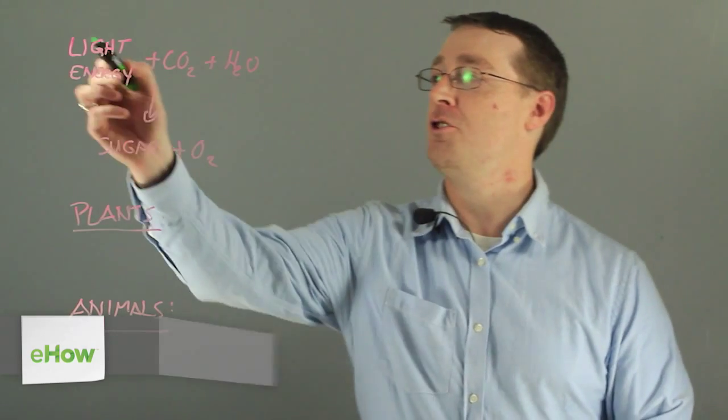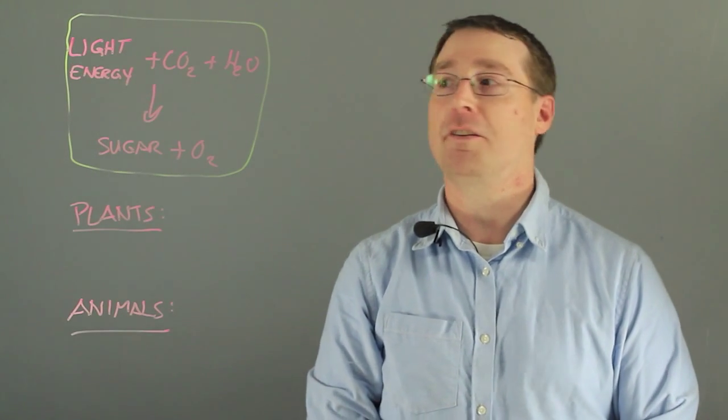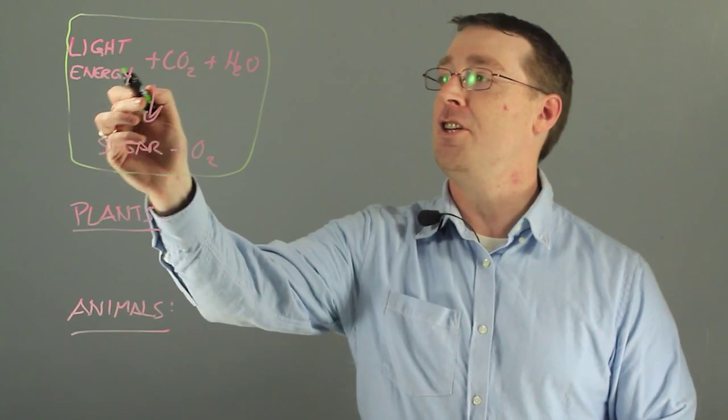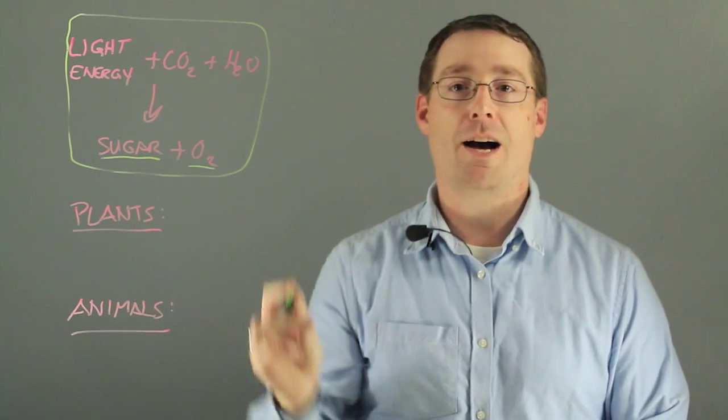Now photosynthesis shown here in this diagram is a very complicated process in which light energy, carbon dioxide, and water are converted into sugar and oxygen.